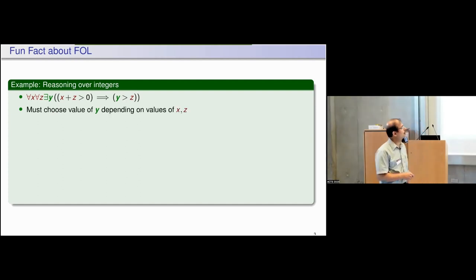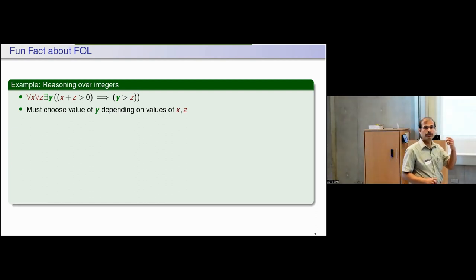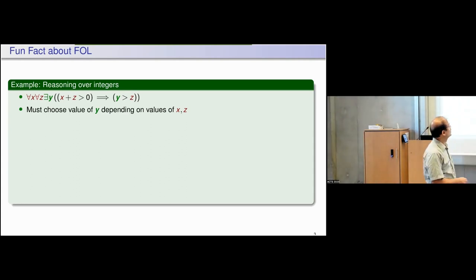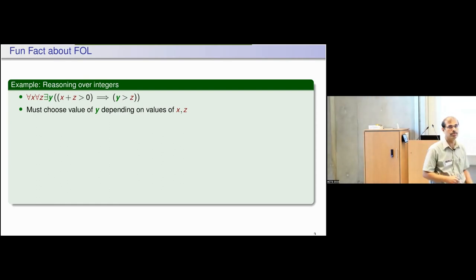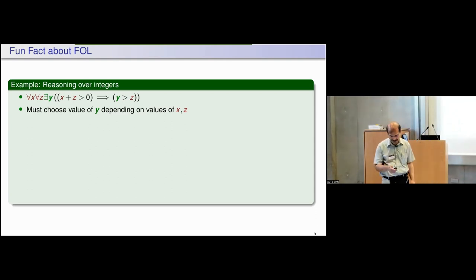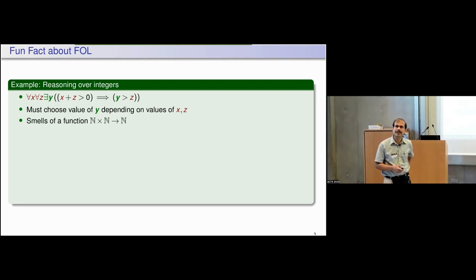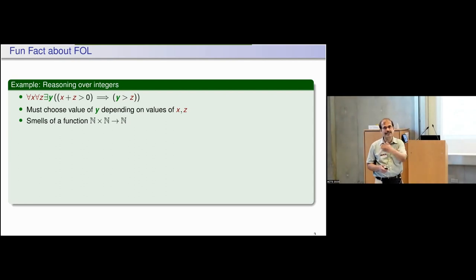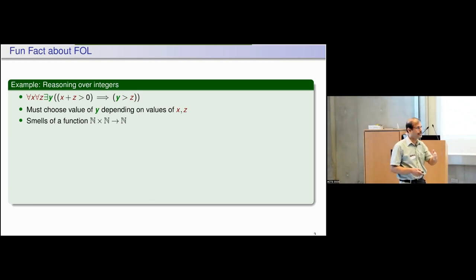This formula is saying that for every value of x and z I have to choose a value of y such that whatever this predicate evaluates to — whenever it evaluates to true — this side should also evaluate to true. So for every value of x and z I have to choose some value of y, which starts to smell like a function from N cross N to N.